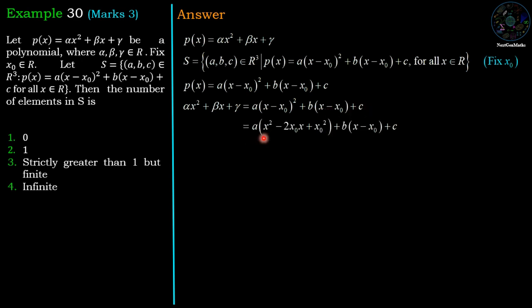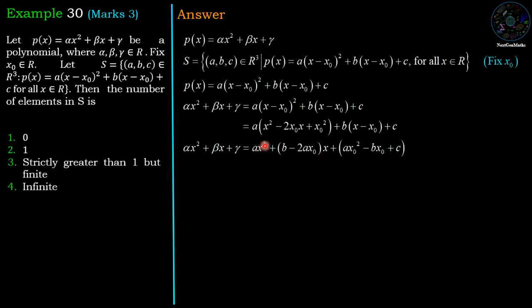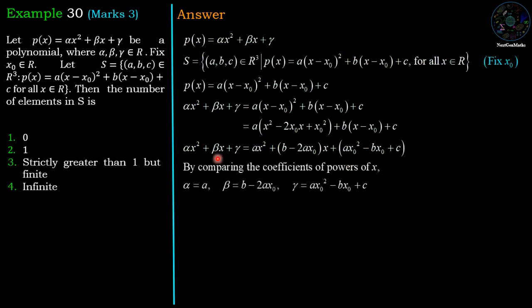Now we expand the right-hand side. So we have a times (x squared minus 2x0·x plus x0 squared) plus b times (x minus x0) plus c. Gathering terms of x squared, x, and the constant on the right-hand side, we have: a·x squared plus (b minus 2a·x0)·x plus (a·x0 squared minus b·x0 plus c). By comparing the coefficients of powers of x, we have three equations.